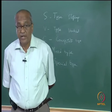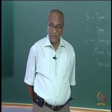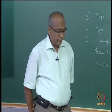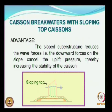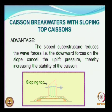Caisson breakwaters with sloping tops have the sloped superstructure reducing the net force—the downward force on the slope cancels the uplift force, increasing the stability of the caisson. That is why a sloping surface is used near the free surface, where the maximum force acts on the caisson.